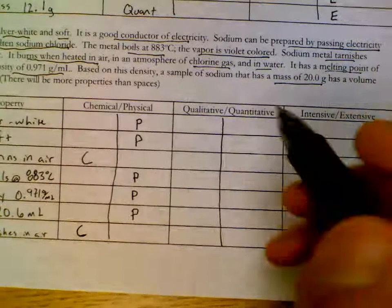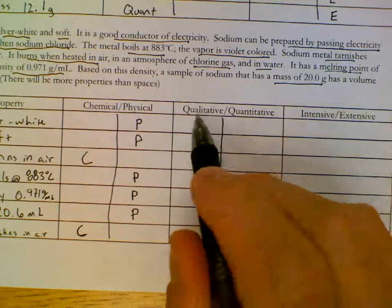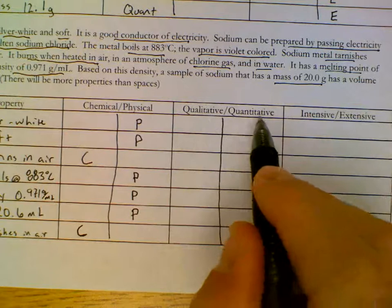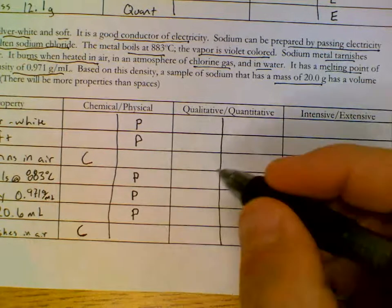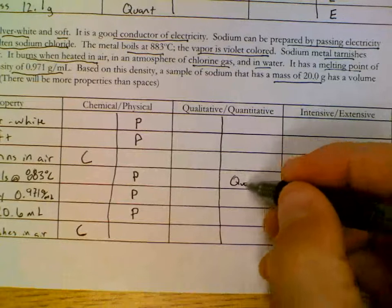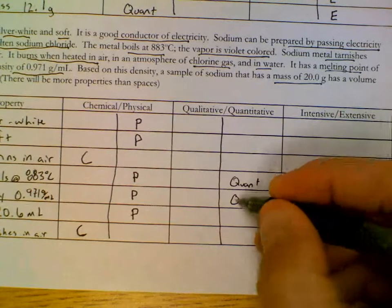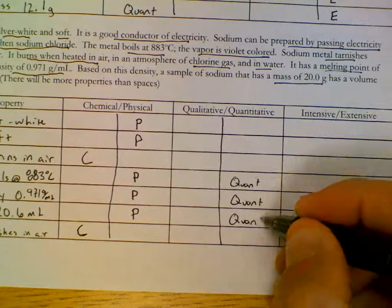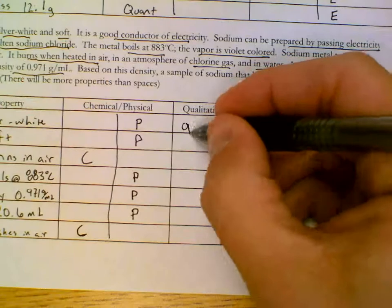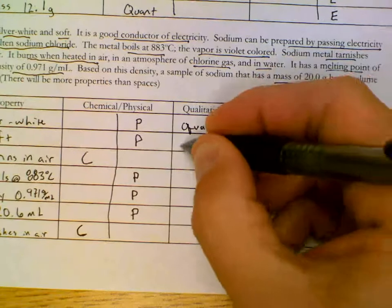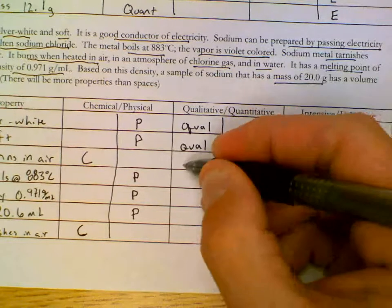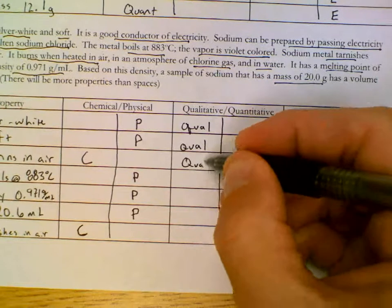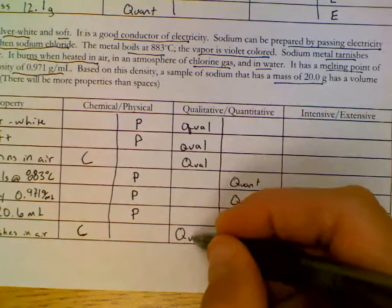Qualitative versus quantitative. Numbers and words. I see a number here, a number here, and a number here. So these are going to be my quantitatives. The remaining will be qualitative because these all use words to describe.